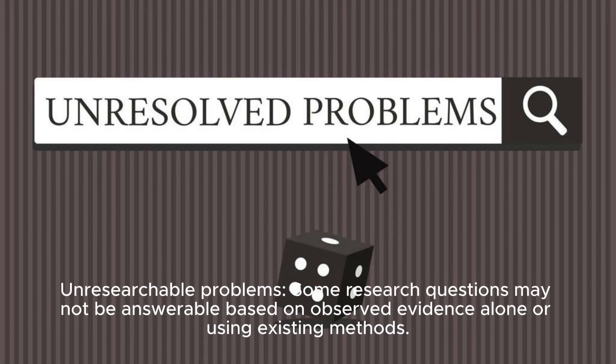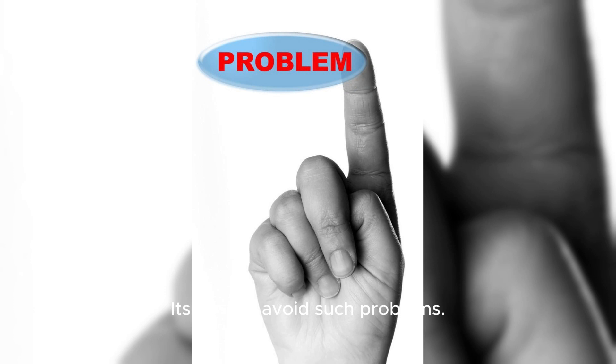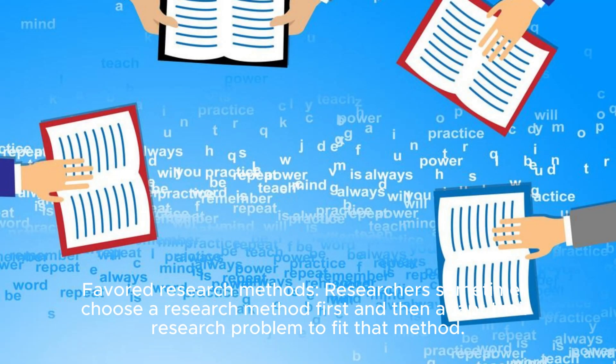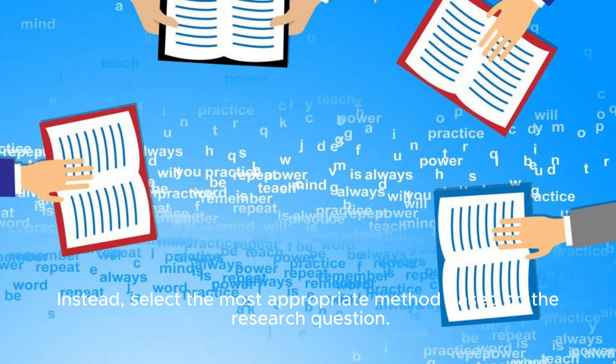Unresearchable problems. Some research questions may not be answerable based on observed evidence alone or using existing methods; it's best to avoid such problems. Favored research methods: researchers sometimes choose a research method first and then adapt their research problem to fit that method. Instead, select the most appropriate method based on the research question.